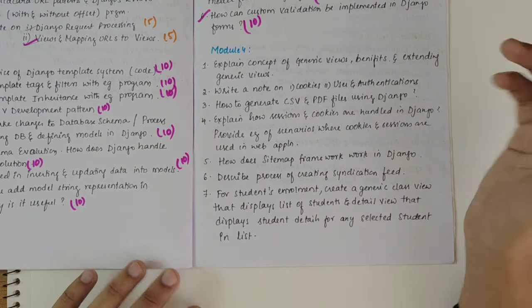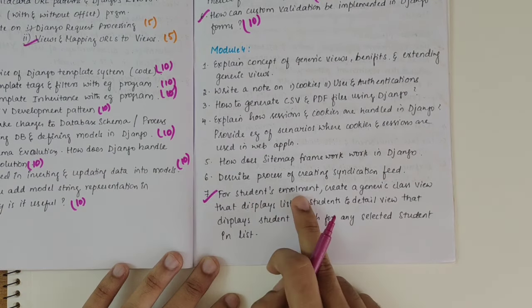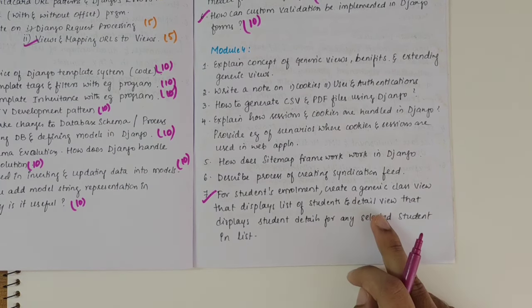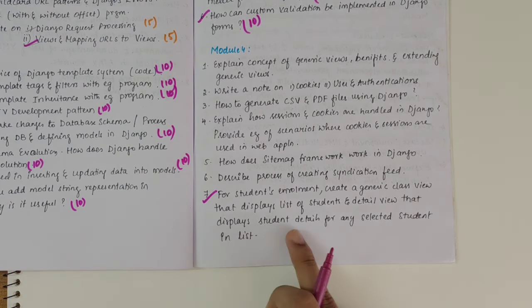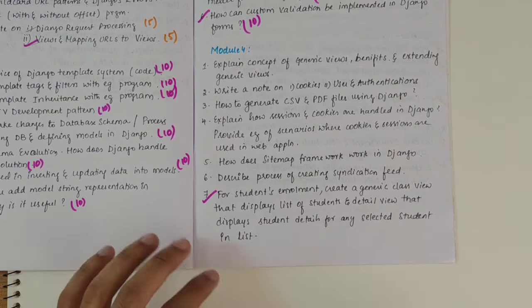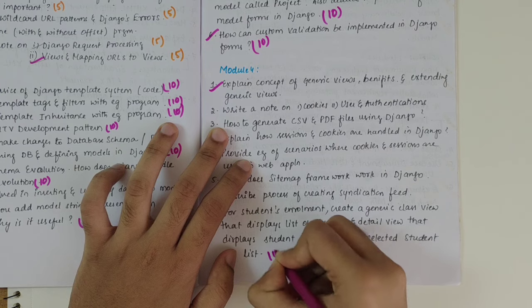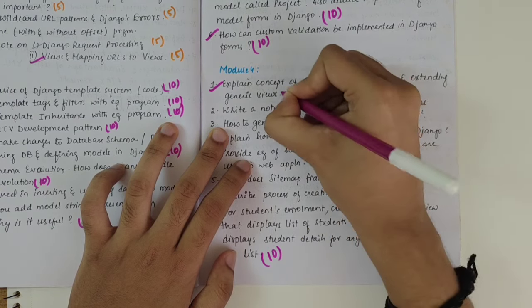So starting from the first program which we have to study is student enrollment. We should create a generic class view that displays list of students and detailed view that displays student details for any selected student in the list. So this is a must question. Next, we have concept of generic views. So this is a 10 mark one, concept of generic views is again 10 marks.